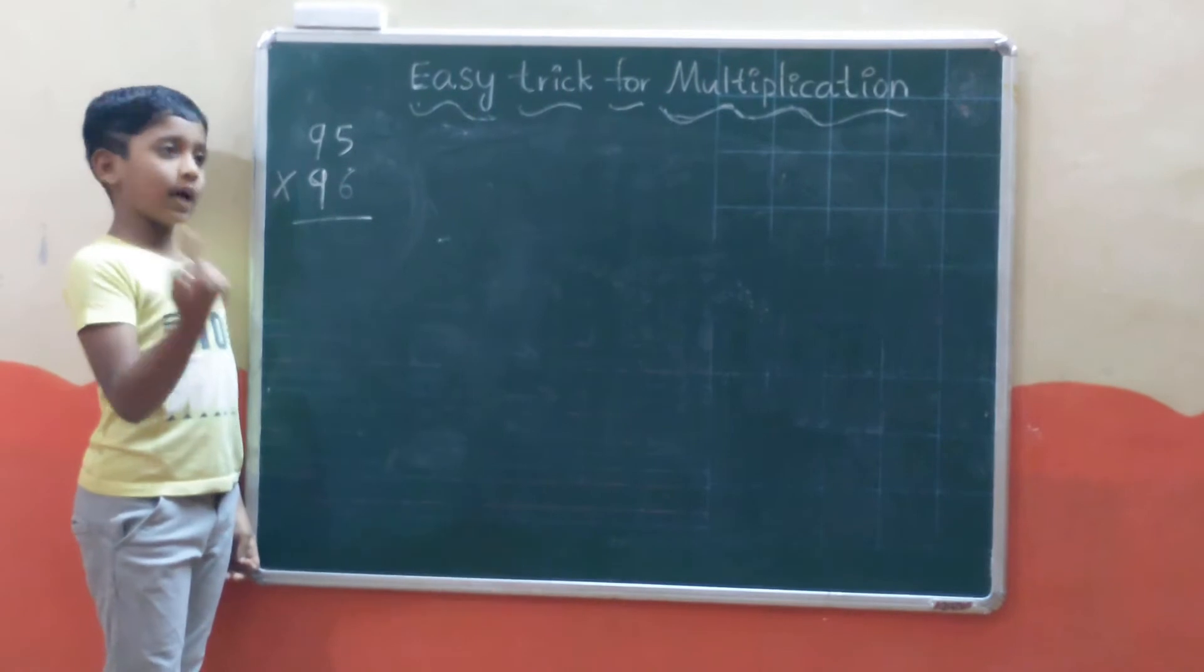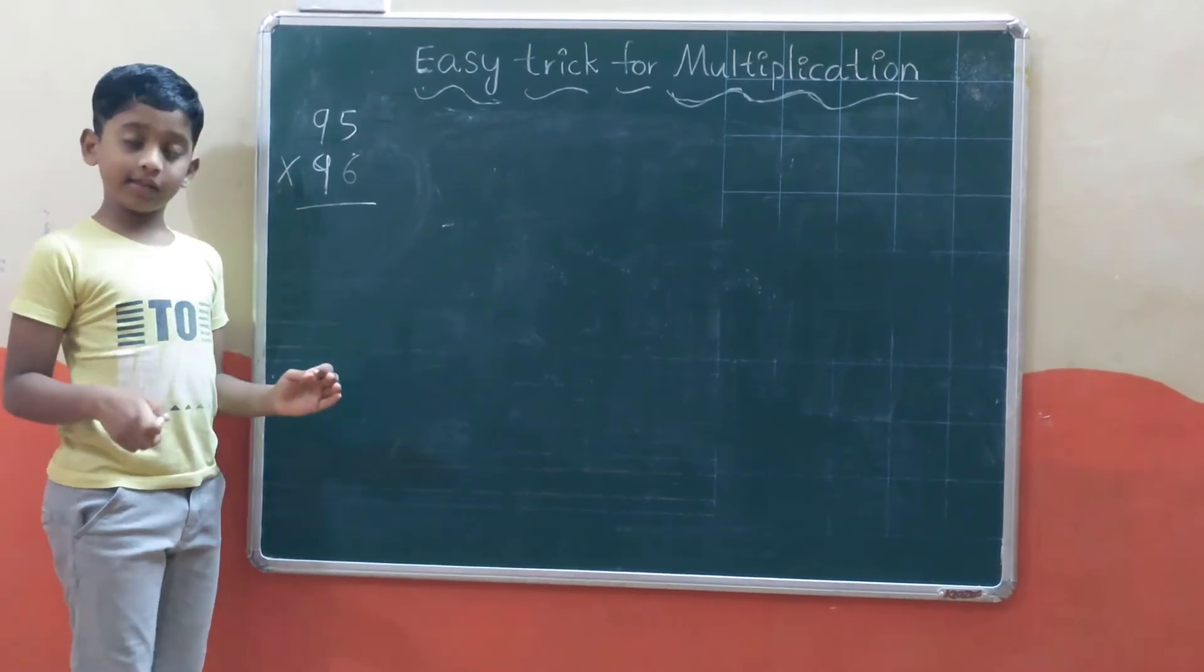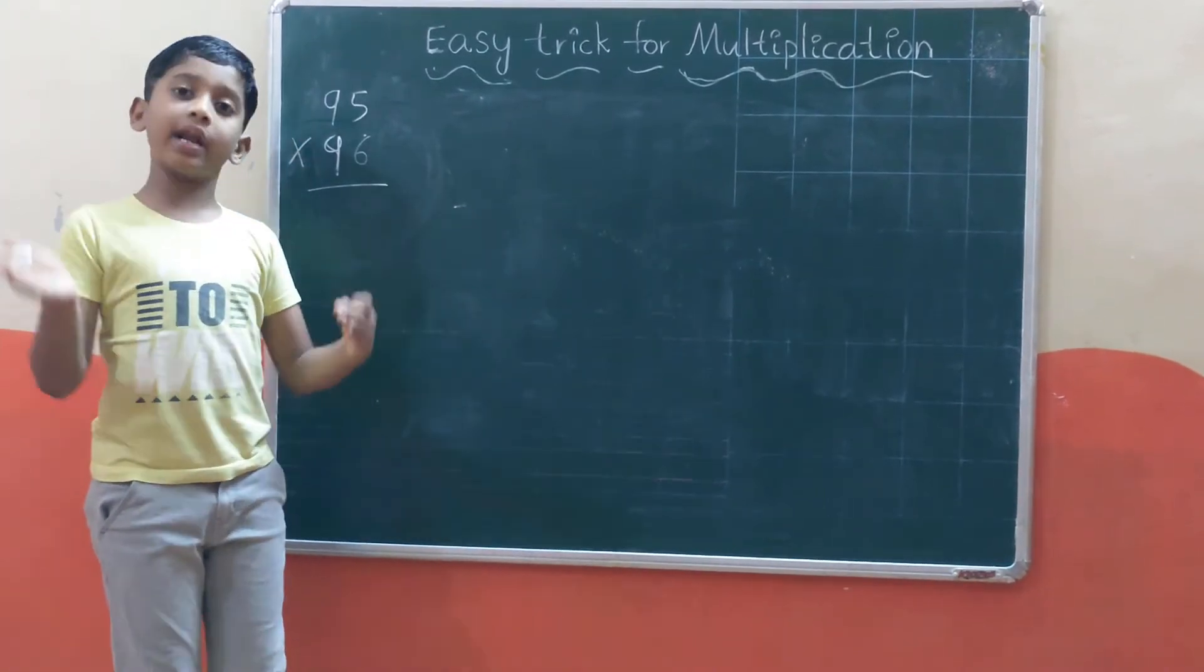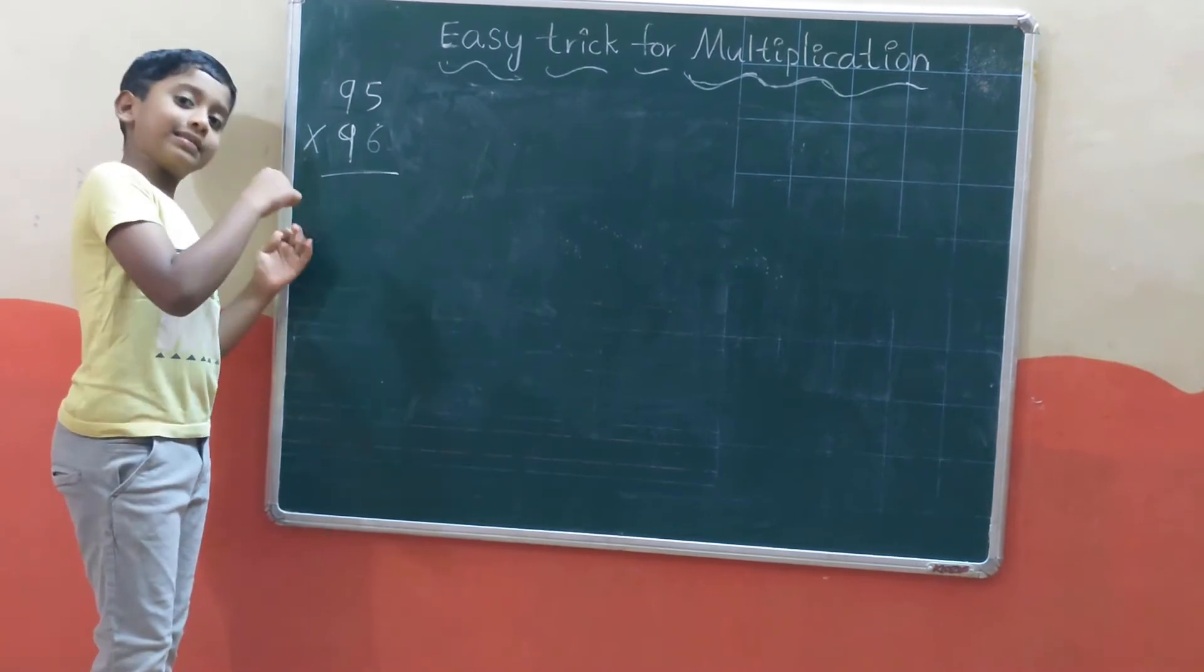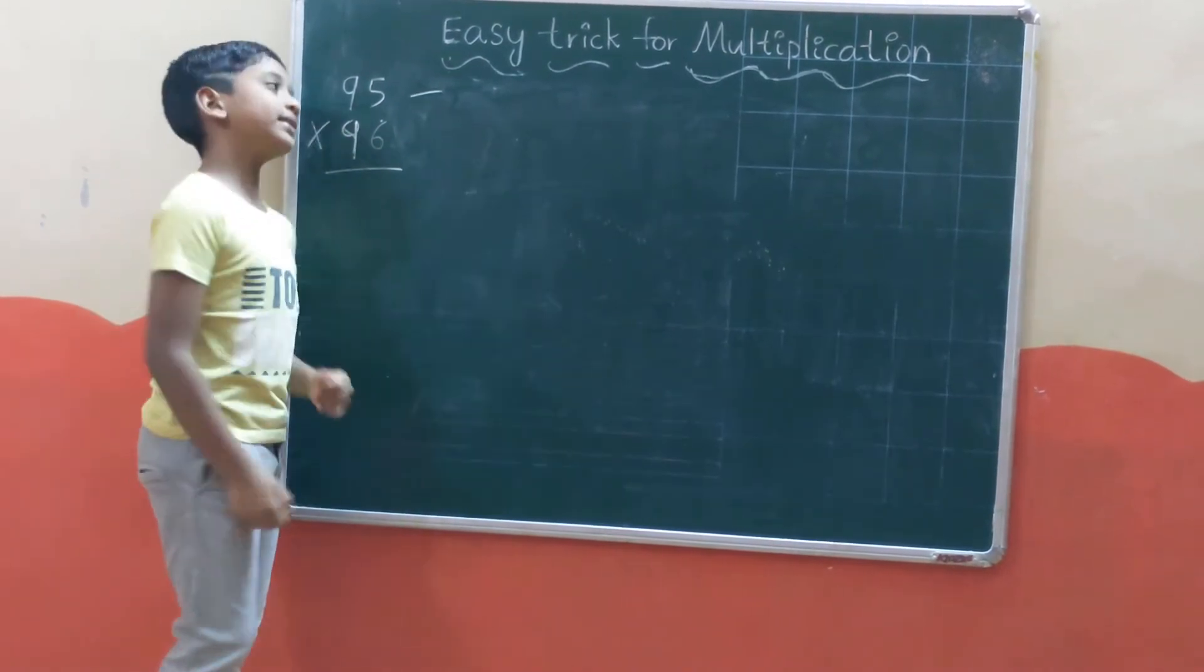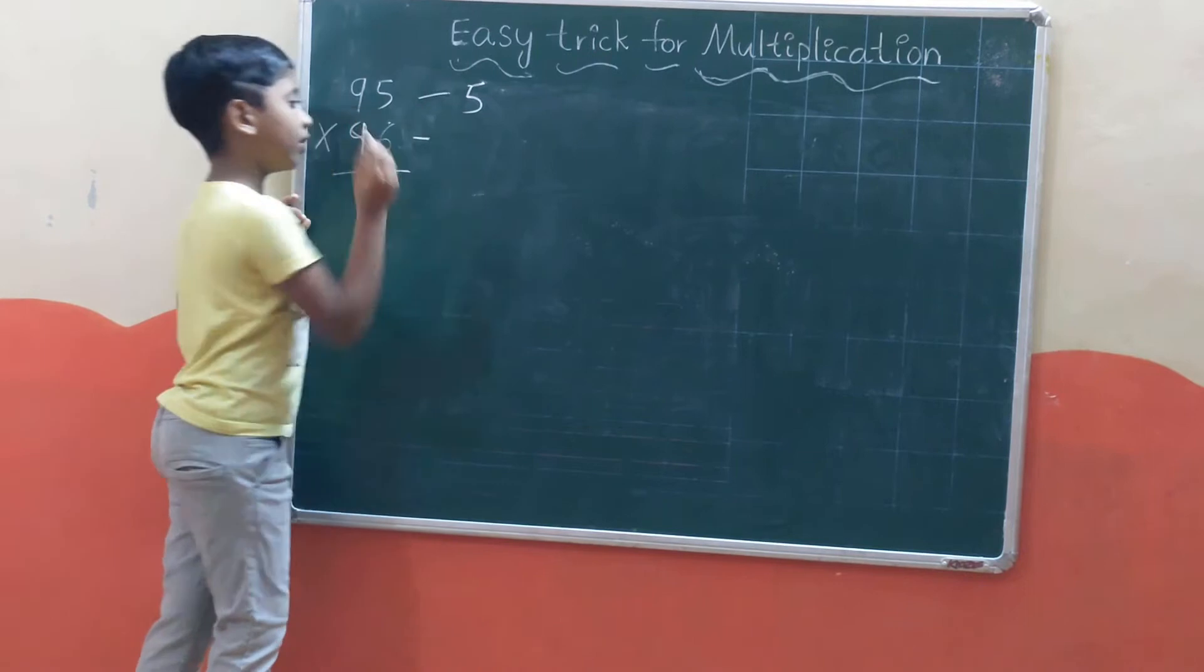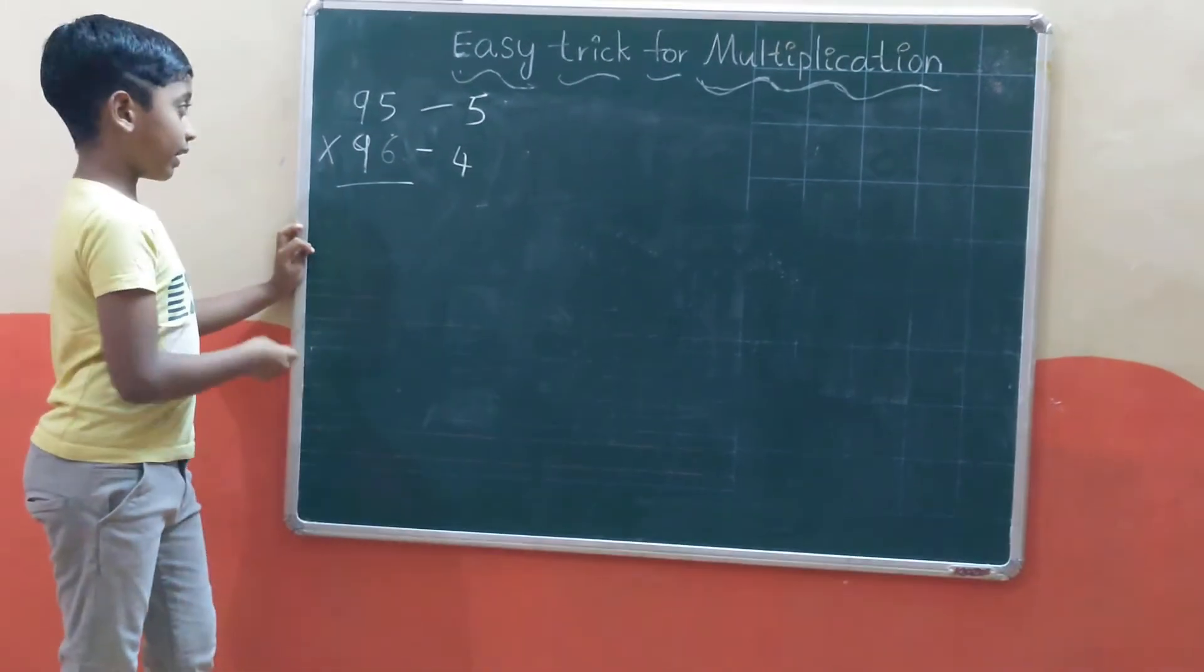The first example is 95 times 96. These numbers are near to 100. 95 is less than 100 by 5, so we write minus 5. Same with 96 - it is less than 100 by 4, so we write minus 4.